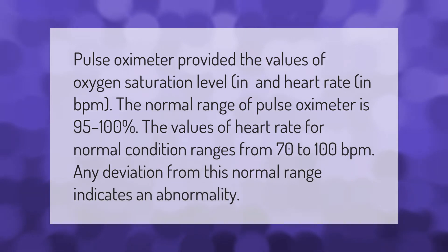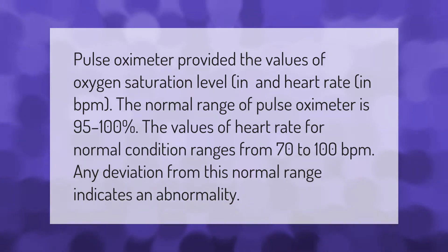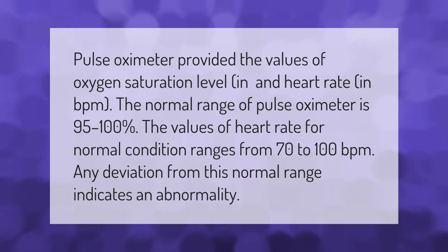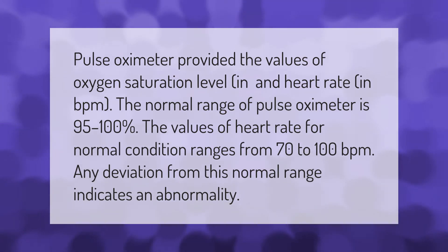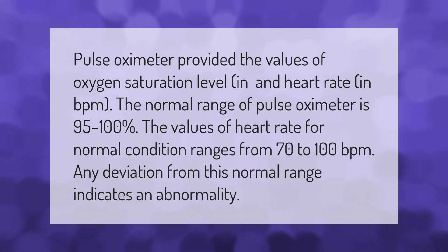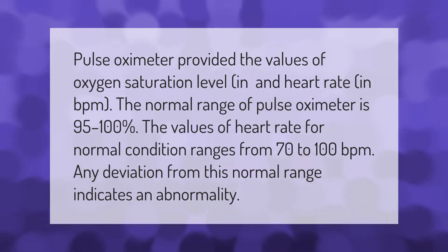A pulse oximeter provides values of oxygen saturation level in percent and heart rate in BPM. The normal range of oxygen saturation from a pulse oximeter is 95 to 100 percent. The normal range of heart rate is 70 to 100 BPM. Any deviation from this normal range indicates an abnormality.